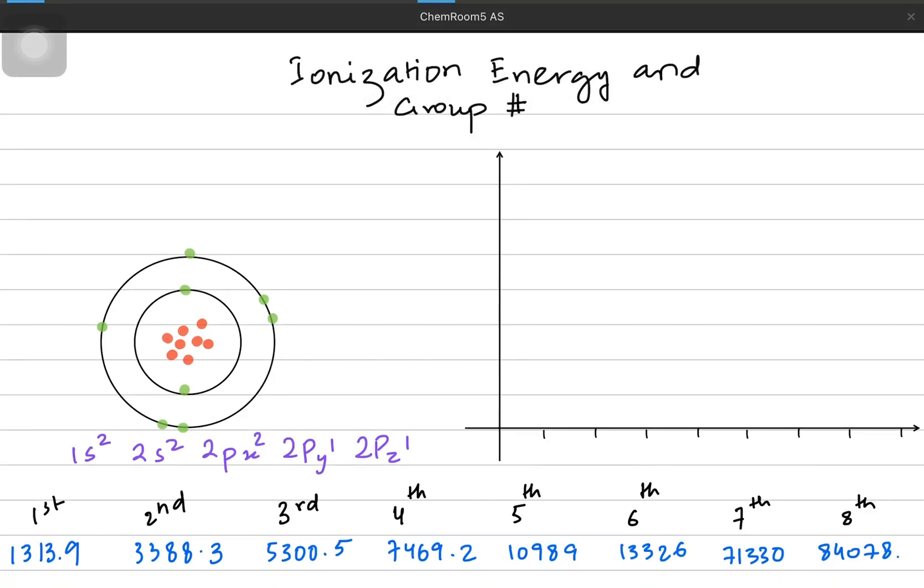If I make a graph and I take these ionization energy values on the y-axis and the number of electrons they represent on the x-axis, the graph would look something like this. I have taken first, second, third values on the x-axis and on the y-axis I'm making the energy values. Each unit is almost 10,000 units, so 10,000 joules is on every unit of the y-axis.